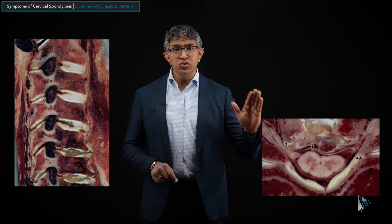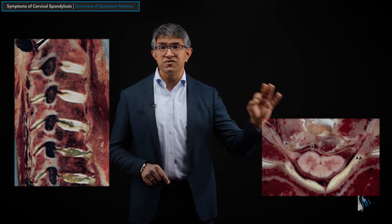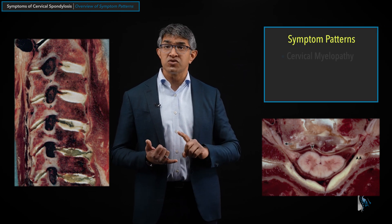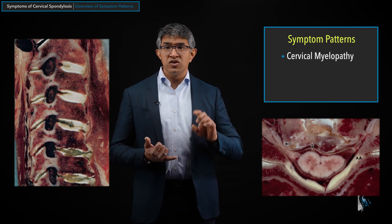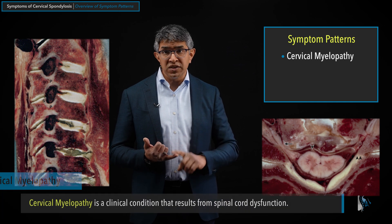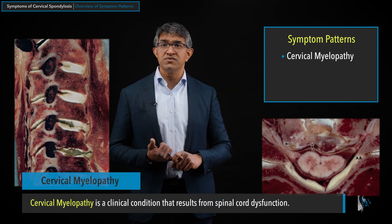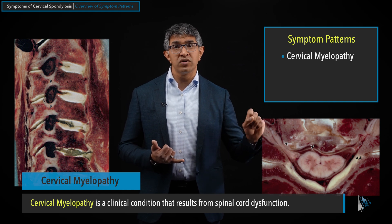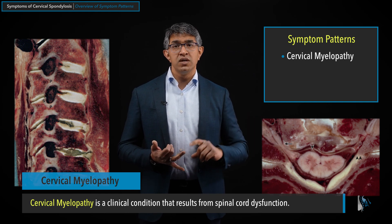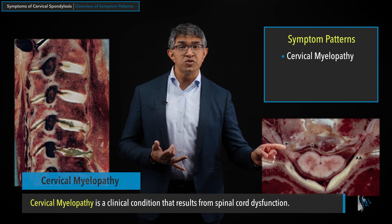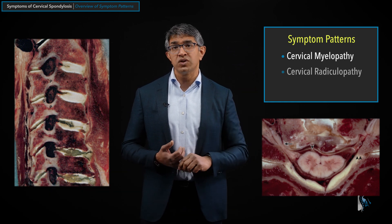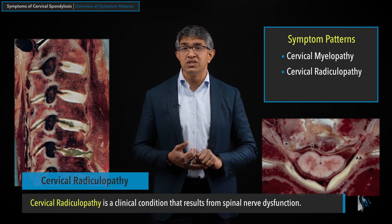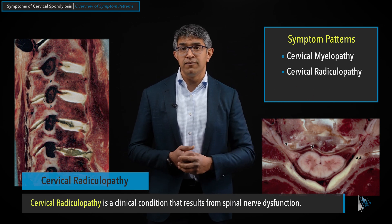The first two important categories of symptoms we see in cervical spondylosis: the first is called cervical myelopathy — a clinical constellation of symptoms that come from pressure and dysfunction of the spinal cord. The second category is called cervical radiculopathy, which comes from pressure and dysfunction of the spinal nerves. We'll get into both of these in much greater detail in the coming minutes.